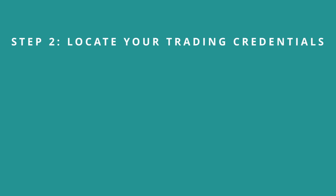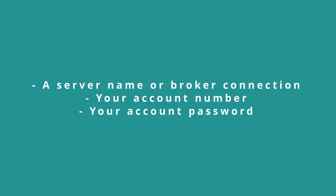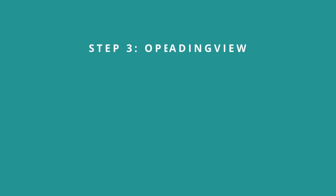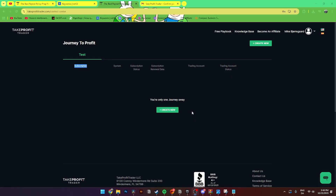Step two is to locate your trading credentials in the trading platform section. You'll need to find your specific account credentials. Take Profit Trader typically provides you with a server name, broker connection, your account number, and your account password.